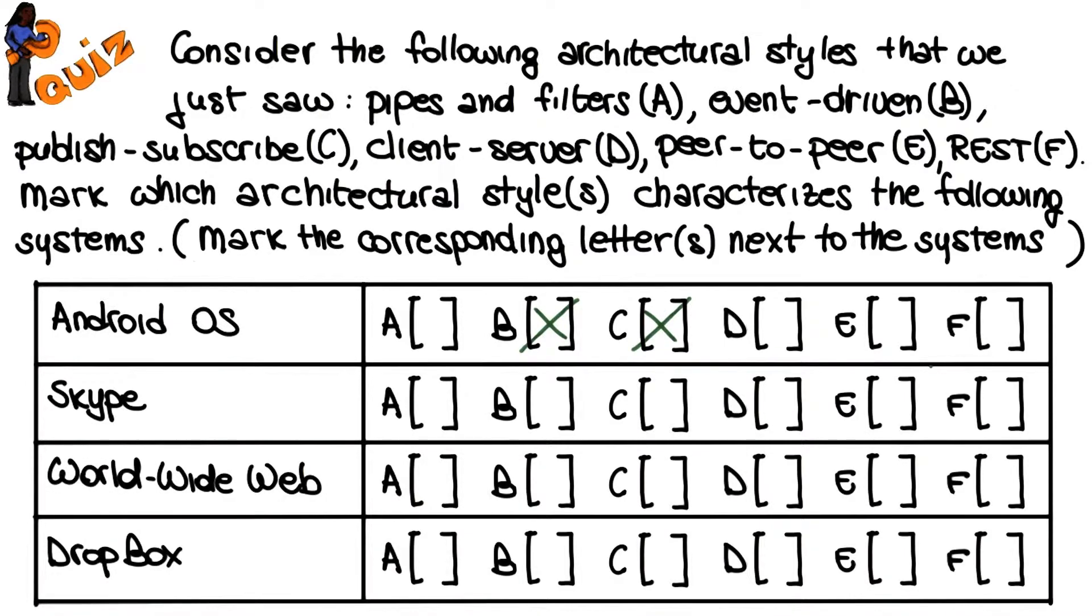Okay, let's start with the Android operating system. The Android system is heavily based on the generation and handling of events, so it is mostly an event-driven system. However, it also has some elements of publish-subscribe in the way elements in the system can register for events of interest. So we can mark both styles here.